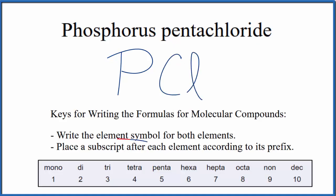Next, we write the subscript after each element according to its prefix. For phosphorus, there is no prefix, so that means it's only one, although we don't write the one, we just assume it's there.